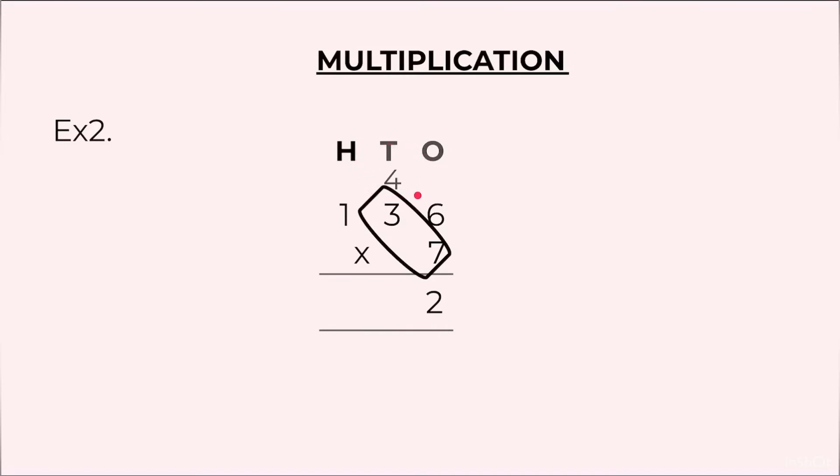25, 2 at the top, 5 at the bottom. Now we will multiply 7 by 1. 7 ones are 7 plus 2, 9. Final answer is 952.